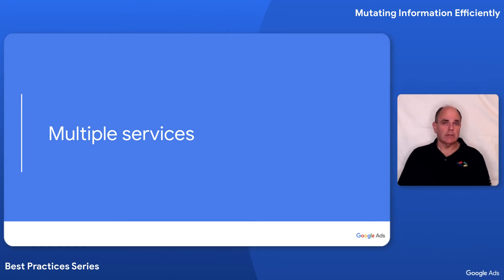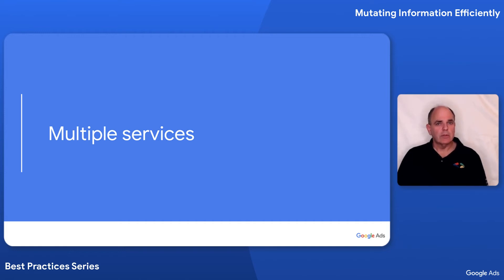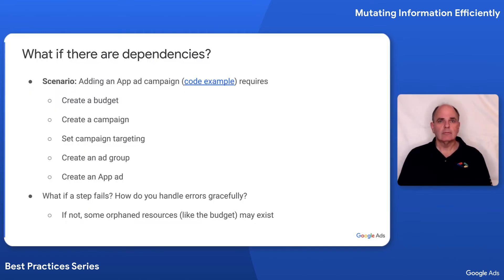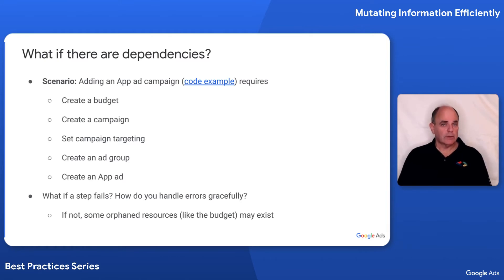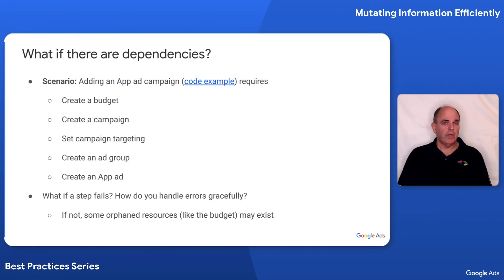This is all fine if you're talking about a single service, like the campaign service. But what happens if there are multiple services? Let's look at a common scenario. Say you have to add an app ad campaign — there are multiple steps requiring multiple services. You have to create a budget, then the campaign, then the targeting, then the ad group, and then finally create the app ad. There are five different services involved. What happens if a step fails? How do you handle these gracefully? And can you make multiple calls to multiple services in a single request to be efficient?